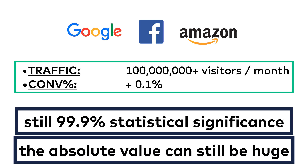But smaller businesses are in a different position. For them, the absolute value of a relative 0.1% change is hardly noticeable. And very importantly, smaller businesses have a smaller audience size, so a change as small as moving a button by 30 pixels would never bring in a big enough sample size to consider the results statistically significant — so practically, they can't even run an experiment like that. The point is: big players with hundreds of millions of users should change one thing at a time, but smaller businesses have to take greater risks and aim for greater results.